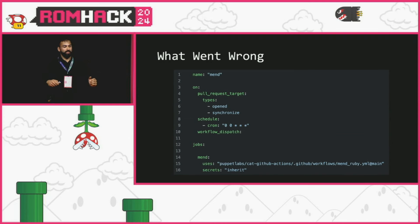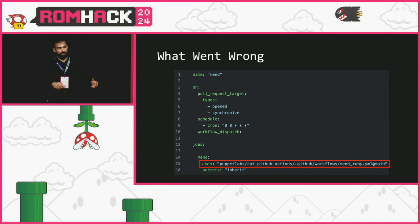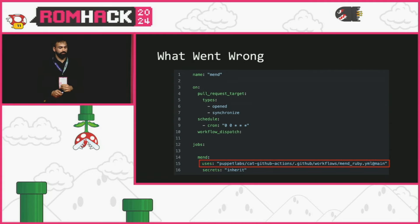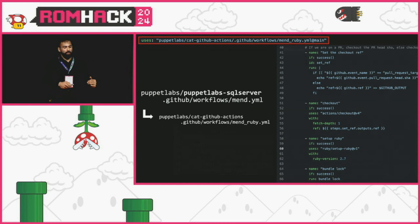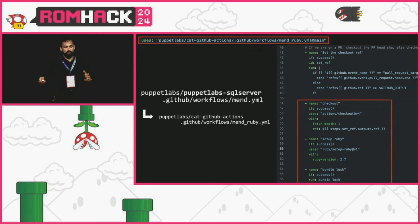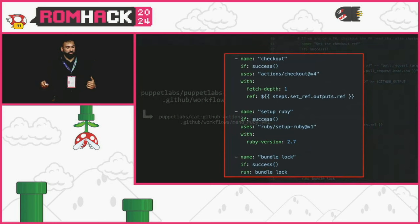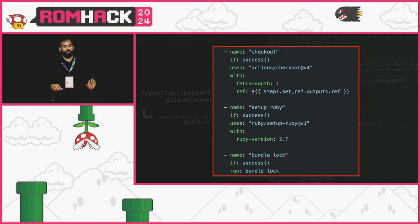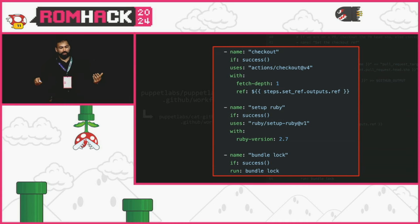Here's an example workflow from the Puppet Labs SQL Server module repository. It runs on pull_request_target and references a MEND workflow. MEND is a static analysis tool that's supposed to increase security — but inside that workflow, it does some logic to get a ref, calls actions/checkout, calls setup-ruby, and then calls bundle lock. I talked about bundler, so this is the same example where the Gemfile is the injection point — I can use it to capture secrets and the GitHub token.